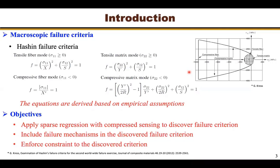Inspired by this work, we are interested in applying sparse regression with compressed sensing to discover failure criteria. We are also interested in including failure mechanisms in the discovered failure criteria. Finally, we are also interested in enforcing constraints to yield conservative criteria so that the predicted results are smaller than the majority of the experimental data.